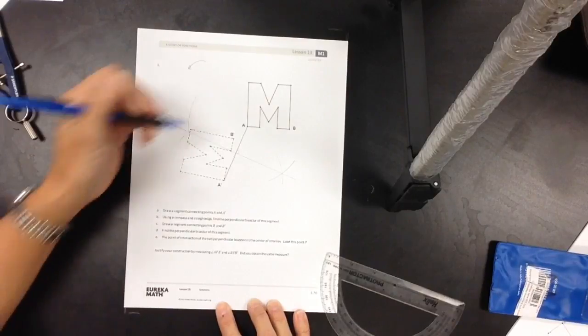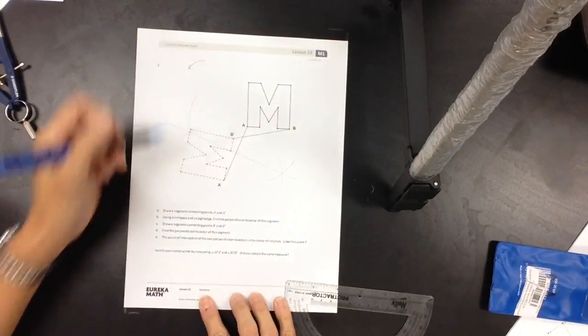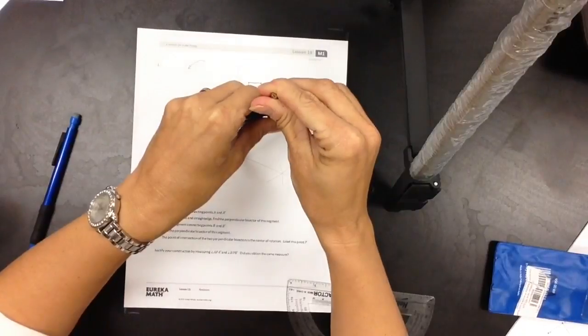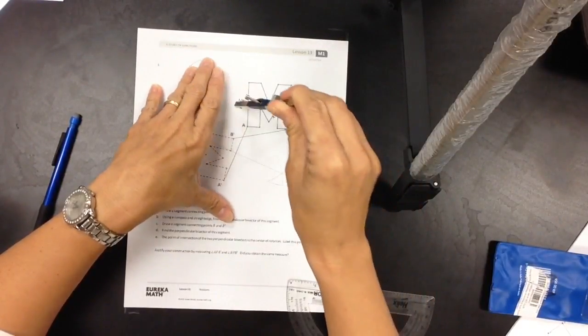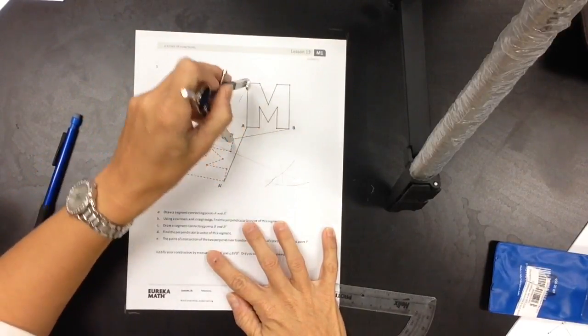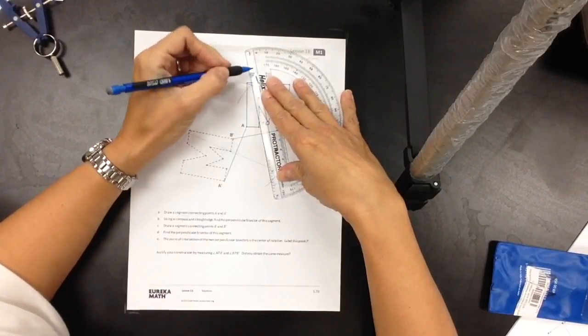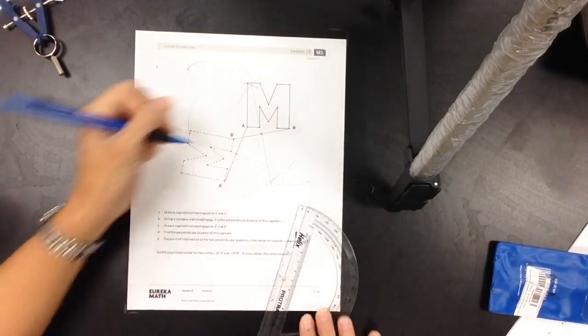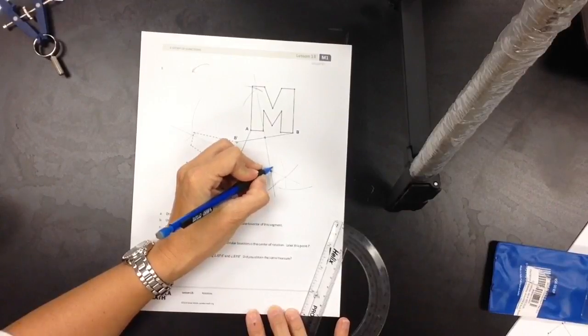Draw a segment connecting points B and B prime. Find the perpendicular bisector of this segment. Let's see how we're doing. It's a little bit too big. All right. One end point and the other. Connect to get my perpendicular bisector. We're right here and right there. The point of intersection of the two perpendicular bisectors is the center of rotation. Right here. Label this P.